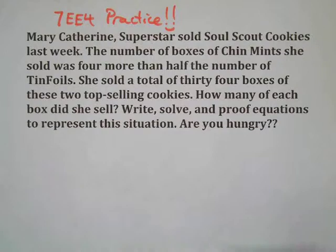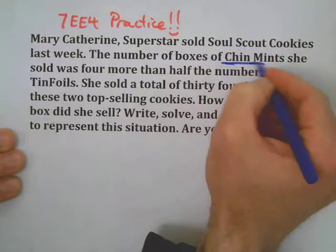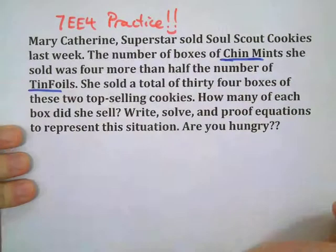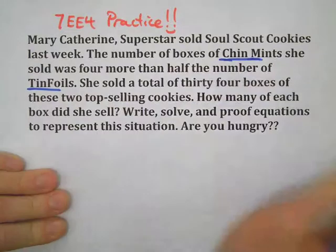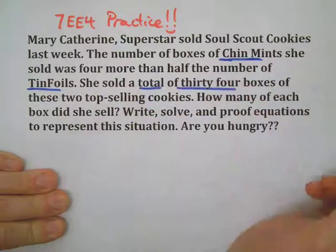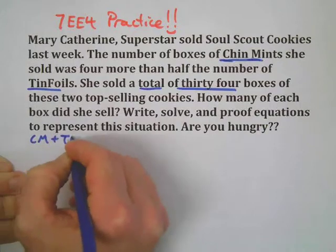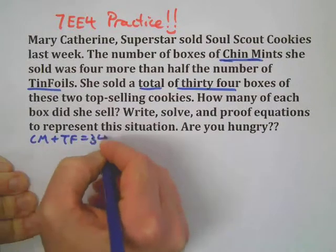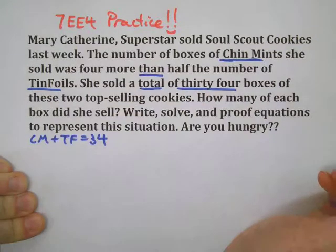Welcome back. Here we go. Our variables: I'm going to use CM for Chin Mints and TF for Tin Foils. We have a total of 34. That means Chin Mints plus Tin Foils equals 34. That's our first equation, and then we have our comparison.